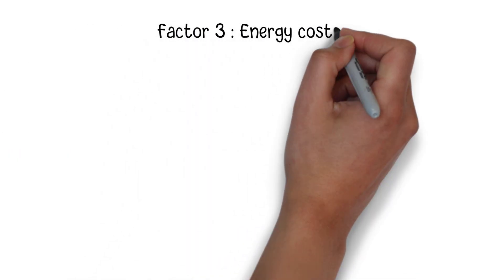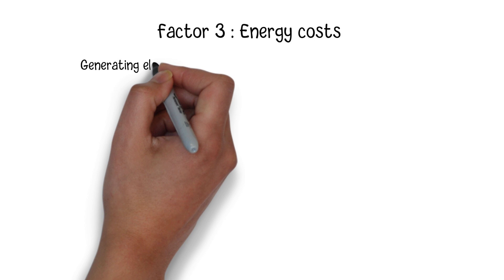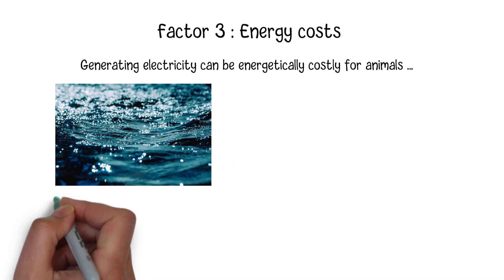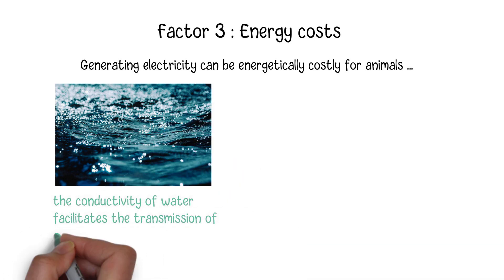Factor 3: Energy Costs. Generating electricity can be energetically costly for animals. In aquatic environments, where conductivity facilitates the transmission of electric signals, the benefits of electricity generation may outweigh the energy costs.